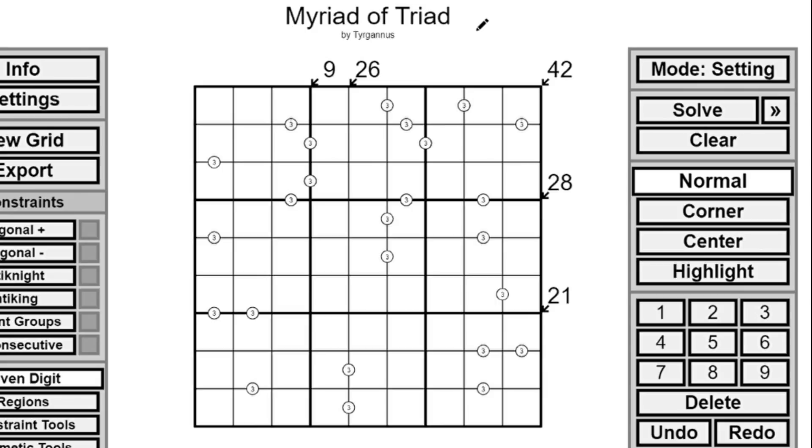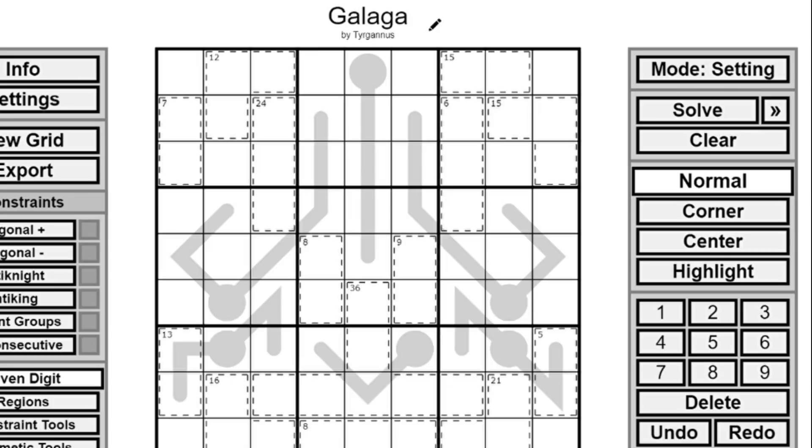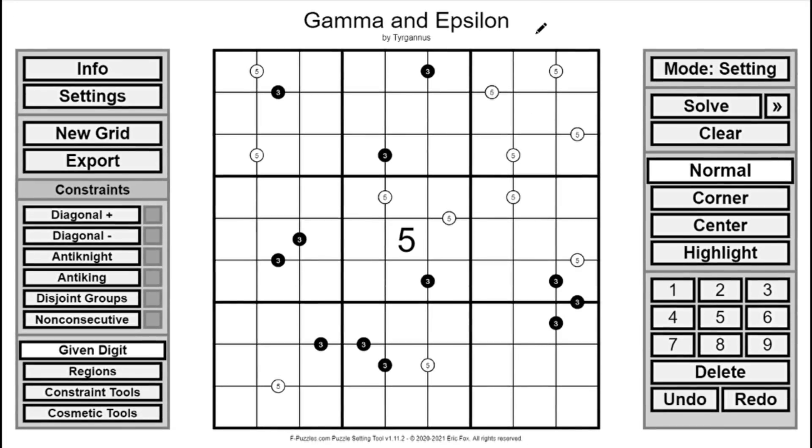But I wanted to make one that didn't just use Ratio 2 and Difference 1, which were definitely the most common I was seeing. So that's what made me make this puzzle, which is really the first stepping stone to Myriad of Triad. Enter Gamma and Epsilon.